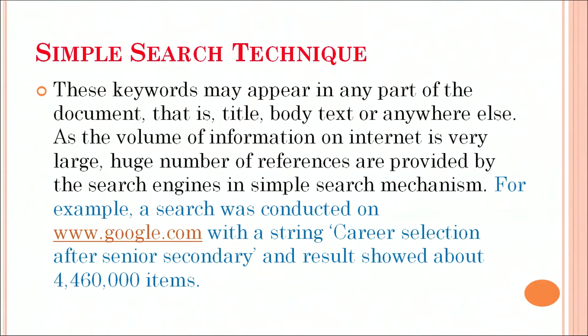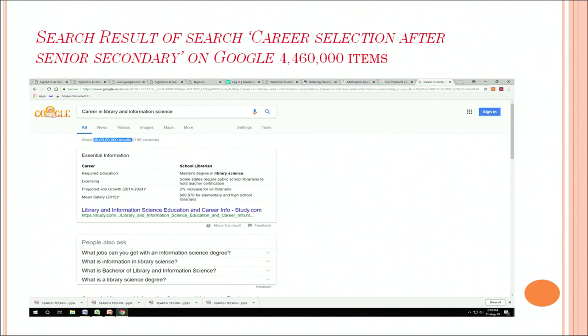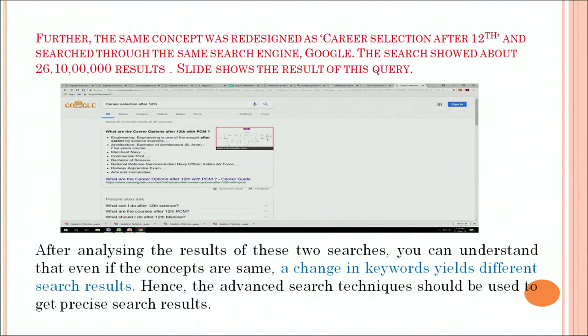As the volume of information on the internet is very large, huge numbers of references are provided by search engines in the simple search mechanism. For example, a search was conducted on google.com with the search string 'career selection after senior secondary' and the results shown were 4,460,000 items. The same concept was redesigned as 'career selection after 12th' and searched through the same search engine Google. The search showed about 262,610,000 results. After analyzing the results of these two searches, you can understand that even if the concepts are same, the change in keywords yields different search results.